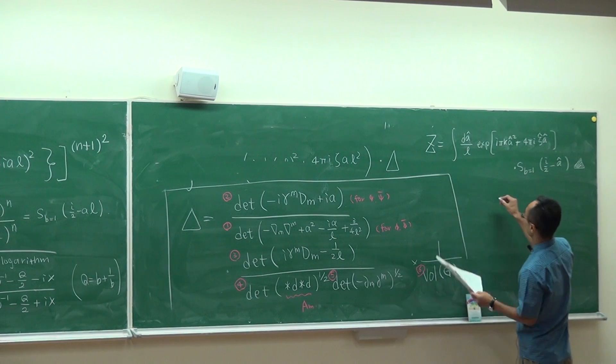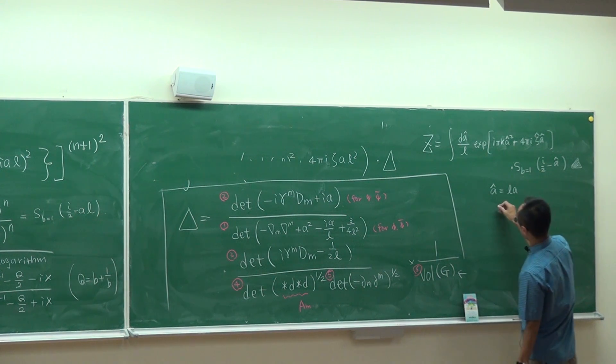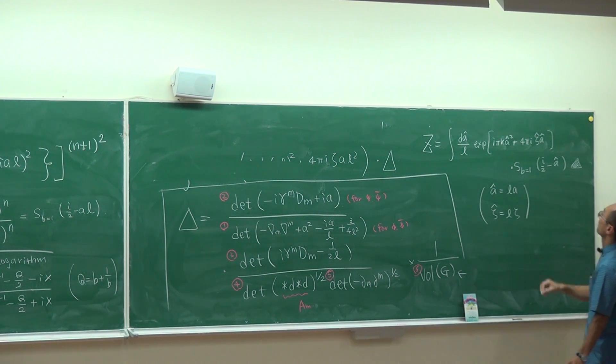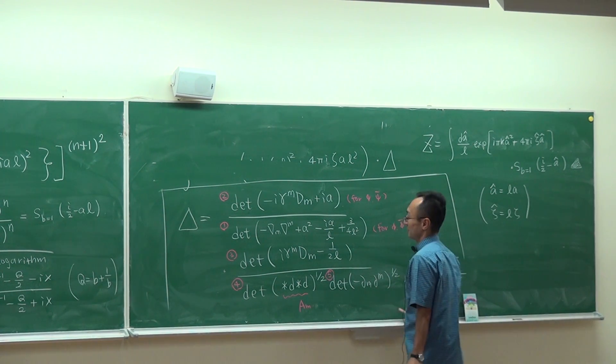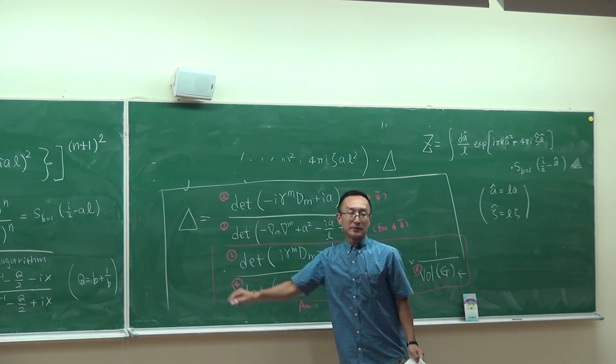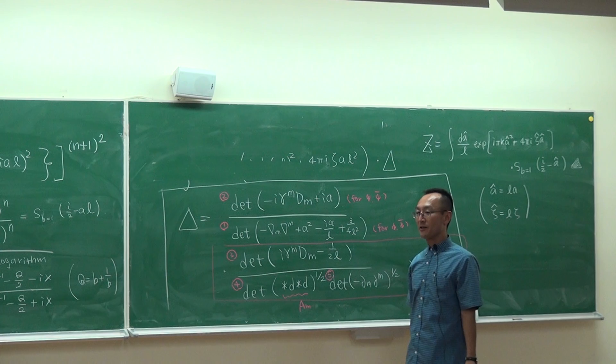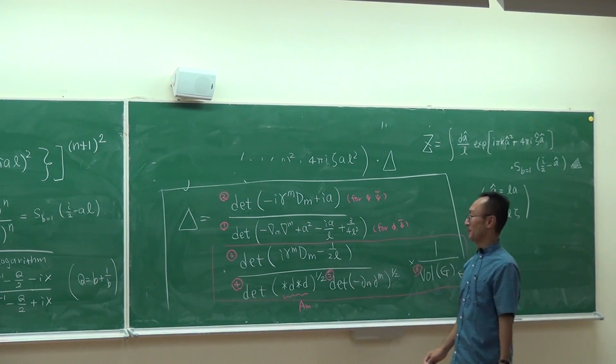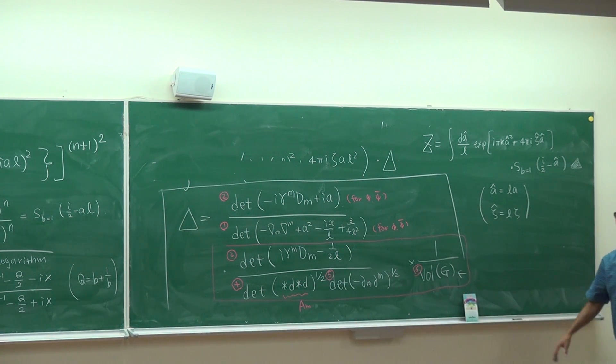Here, a-hat and zeta-hat are suitable combinations of the parameters in the theory. We are left to compute this part, so this black triangle is important. This black triangle involves the computation of determinants for things belonging to the vector multiplet.